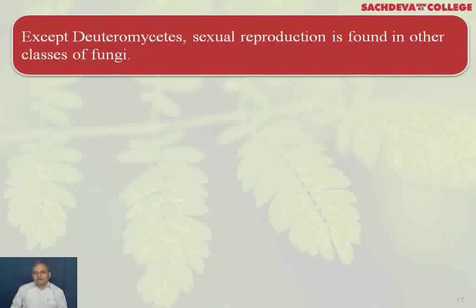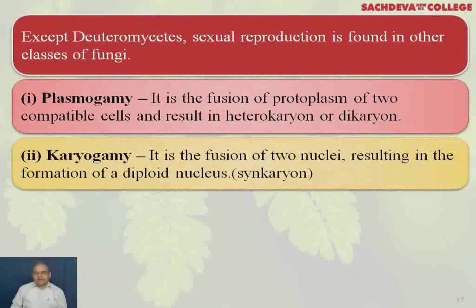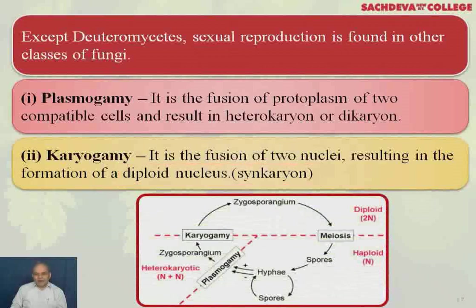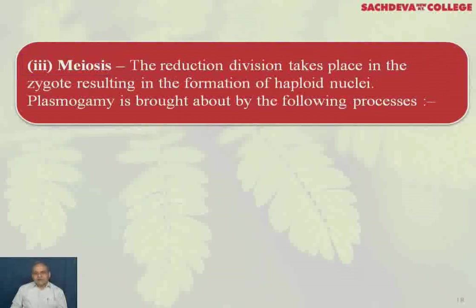Except in deuteromycetes, sexual reproduction is found in all other classes of fungi. Plasmogamy is the fusion of the protoplast of two compatible cells, resulting in a heterokaryon or dikaryon. Karyogamy is the fusion of two nuclei resulting in the formation of a diploid nucleus called a synkaryon. Meiosis is the reduction division that takes place in the zygote, resulting in the formation of haploid nuclei.